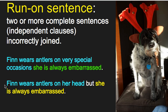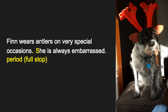This next example of a run-on is a very common mistake — actually the most common comma error in the world: 'Finn wears antlers on her head but she is always embarrassed.' We have the first sentence in blue, the second in yellow, and a conjunction 'but,' but without a comma, it's missing a comma — so we technically have a run-on sentence.